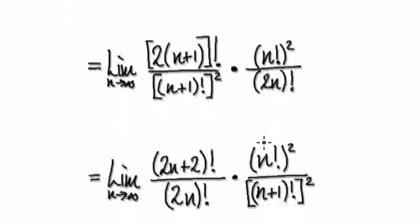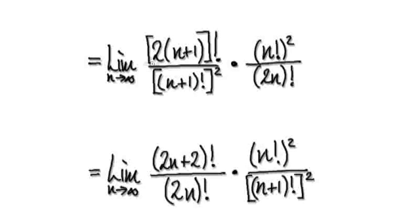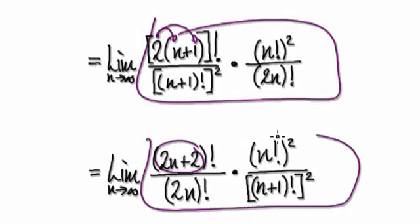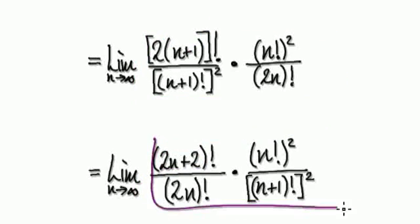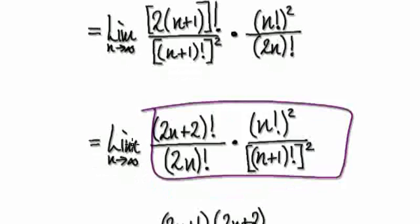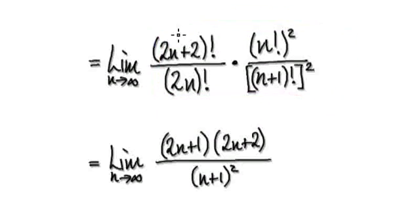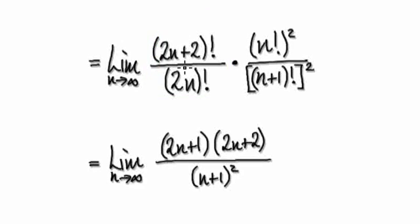Once you're here, multiply this out — this times this, and this times this — and that gives you this combined expression. So this whole thing will become this. All we've done is multiply it out, which gives us this. Once you're here, try to understand what's going on, because this is very similar to what we did at the start of the video.